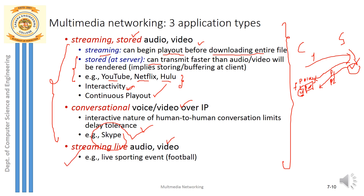The third type is streaming live audio video. Something is happening somewhere live and you watch it. If you miss a moment, that part is gone — you must watch it continuously for the live experience. Examples are live sporting events such as cricket matches or football matches. No video is stored anywhere in the server — this is continuous play-out where strict timing must be followed. These are the three application types: streaming stored video/audio, conversational video/audio, and streaming live audio/video.